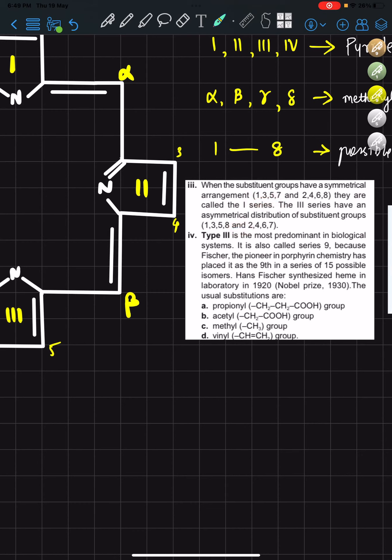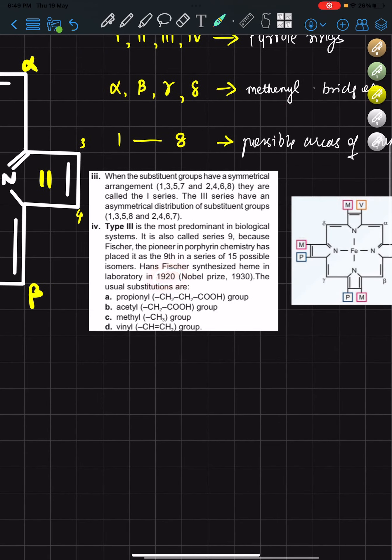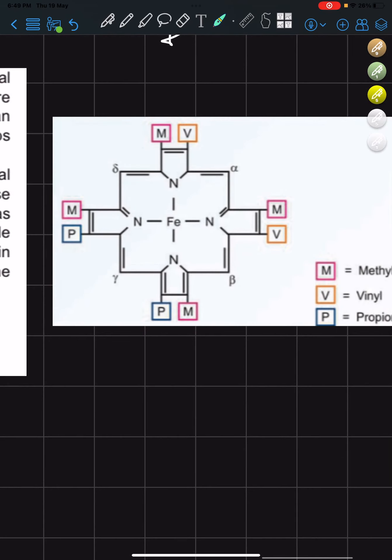So Hans Fischer synthesized heme in the lab in 1920. This is how heme looks: you have the iron atom in the middle, with M, V, M, V, M, P, and P groups. And that's all for this video, thanks for watching.